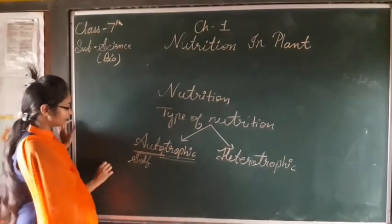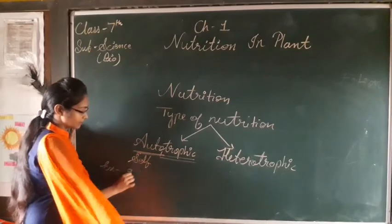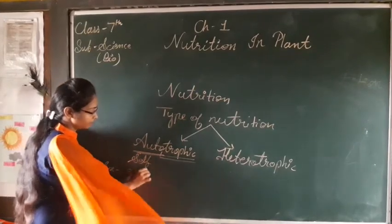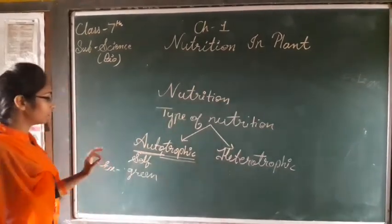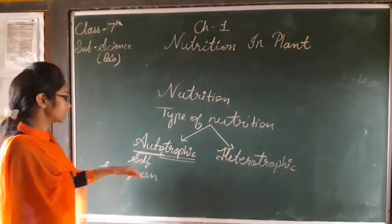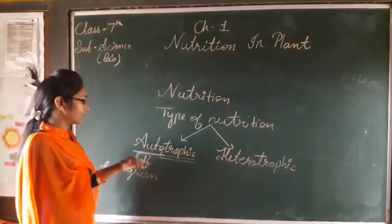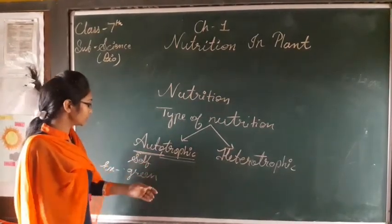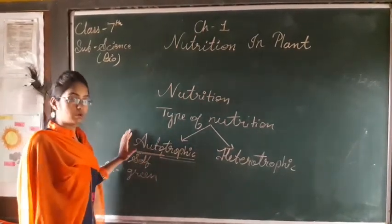For example, green plants — because green plants have chlorophyll and they prepare their own food with the help of raw materials such as carbon dioxide and water through the process of photosynthesis. So green plants are called autotrophs.